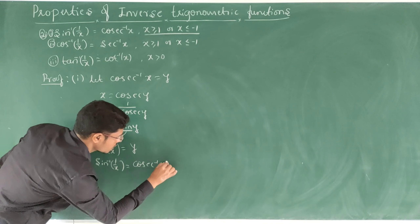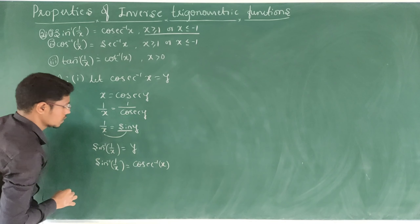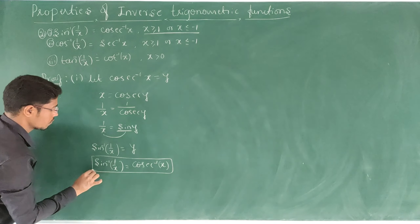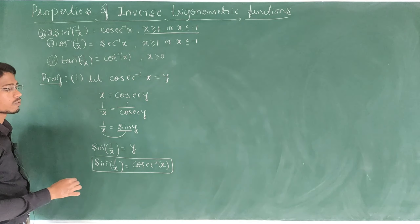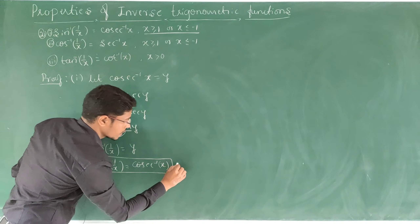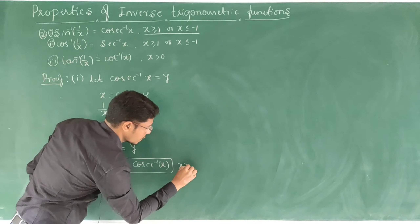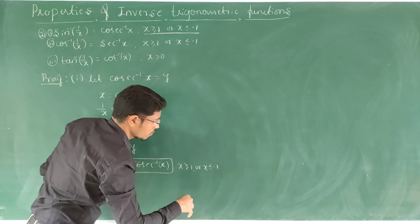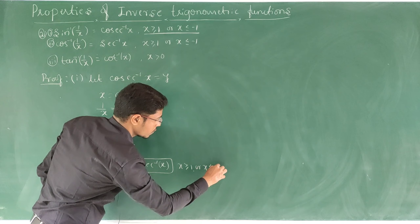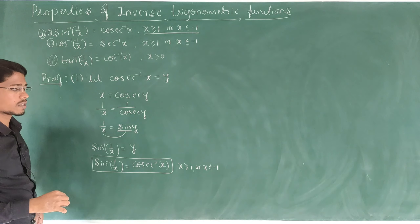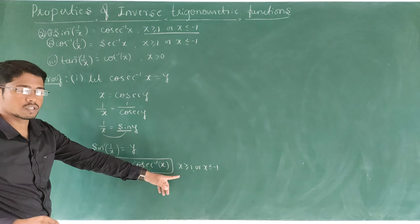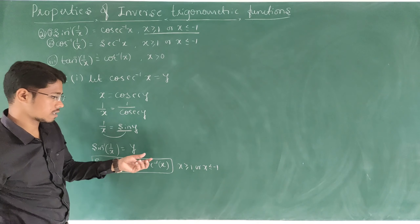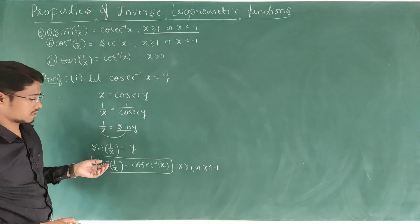Therefore sine inverse of 1/x equals y, which is cosec inverse of x. This is the property we needed to prove. This is possible when x is greater than or equal to 1 or x is less than or equal to minus 1. On the basis of this condition, the property will work. Other than these intervals, it does not work.